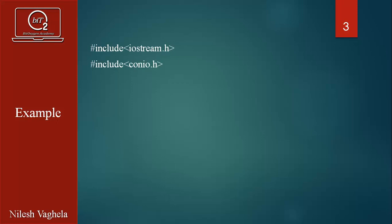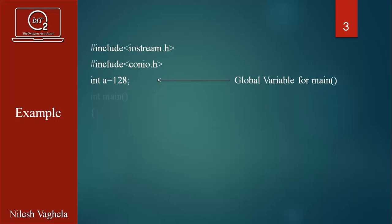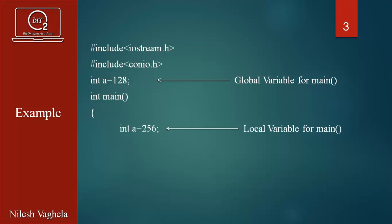As you can see, I have included two header files: iostream.h and conio.h. Integer A equals 128 — this is my global variable for the main function. Now, inside integer main, I have integer A equals 256, which is a local variable for main. This local variable is known as local variable for the main function, and the other variable is global for this main function.